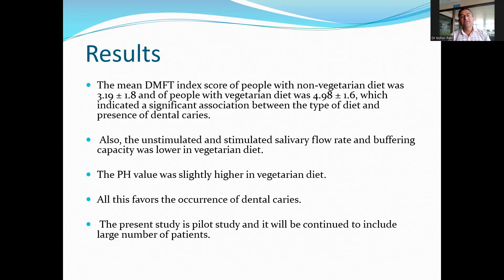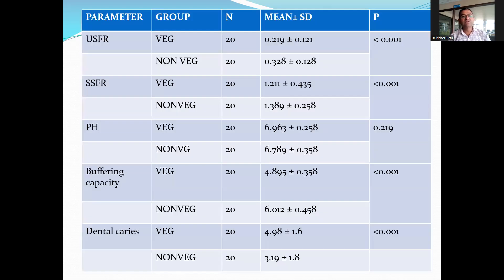The present study is a pilot study and will be continued to include a larger number of patients. The unstimulated and stimulated salivary flow rates were slightly higher in non-vegetarian diet people. The pH and buffering capacity — which was 4 in the non-vegetarian group — along with lower caries occurrence, all indicate a more favorable oral environment in non-vegetarians.